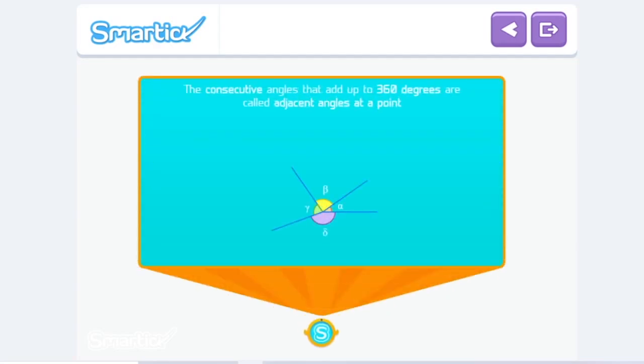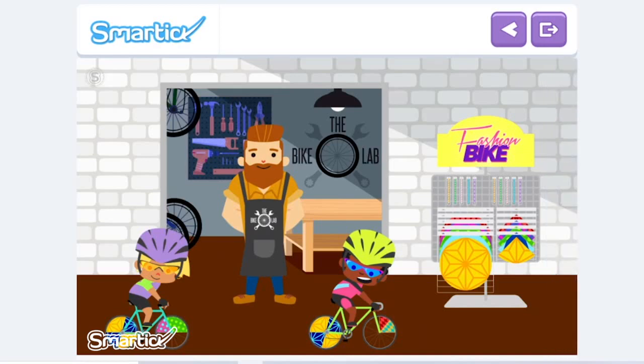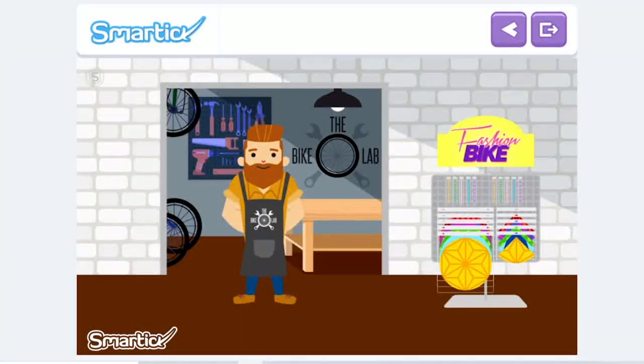The consecutive angles that add up to 360 degrees are called adjacent angles at a point. Eva and Zoe's bikes are ready to go for a ride. With the girls, you have learned about the different relationships between angles, depending on their position and measurement. Now, keep practicing!